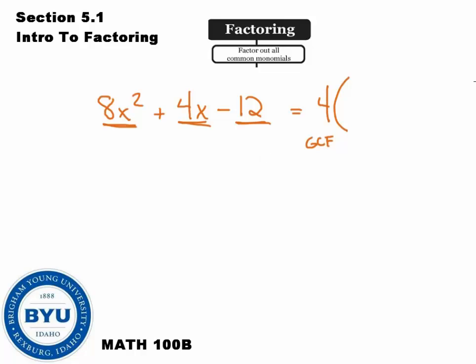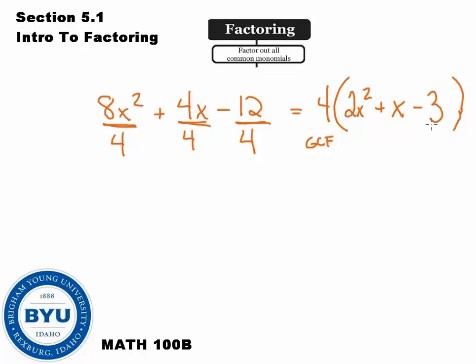To find what's left inside the parentheses — this is undistributing — when we distribute we multiply, so when we factor we divide. We divide each of these terms by the greatest common factor. 8x² divided by 4 is 2x², 4x divided by 4 is x, and 12 divided by 4 is 3, giving us -3. So the factored form is 4(2x² + x - 3). That's what we need to do when pulling out the greatest common factor.